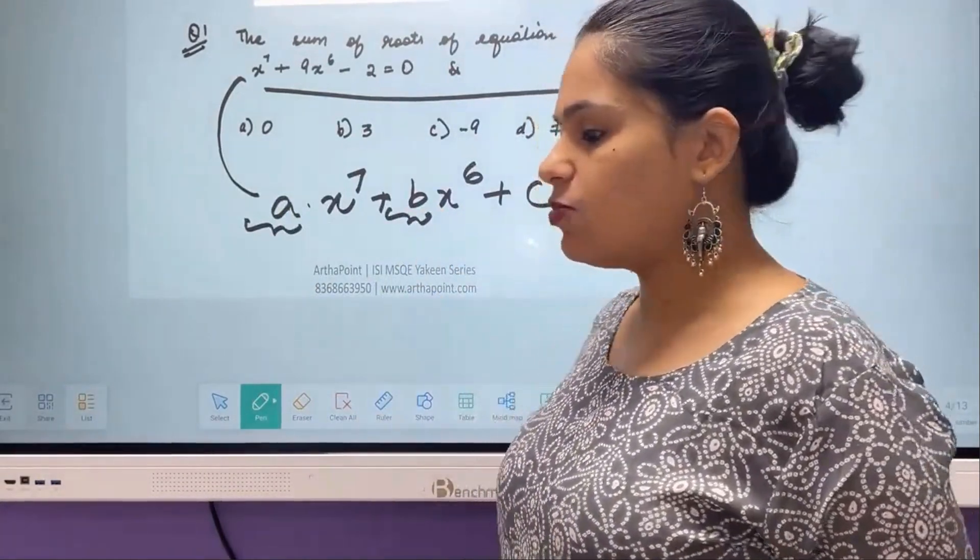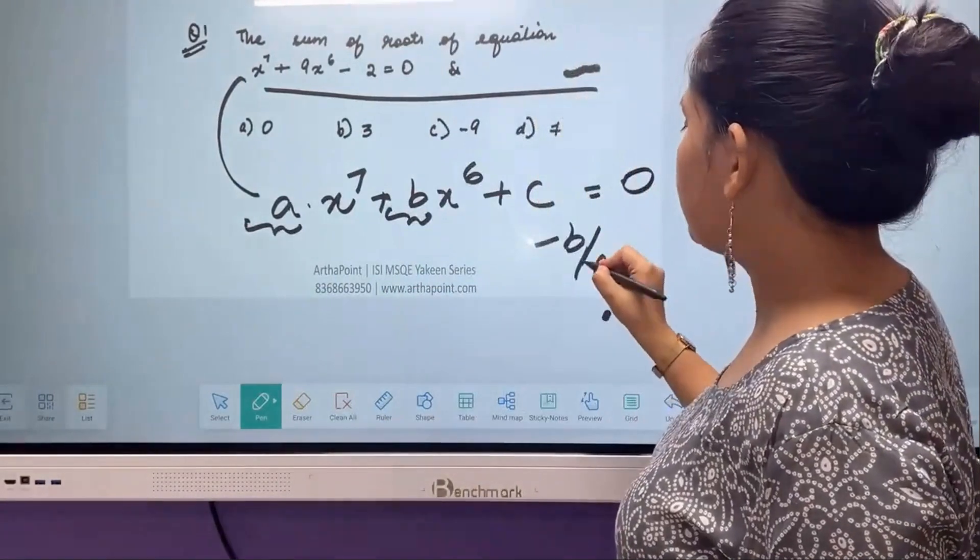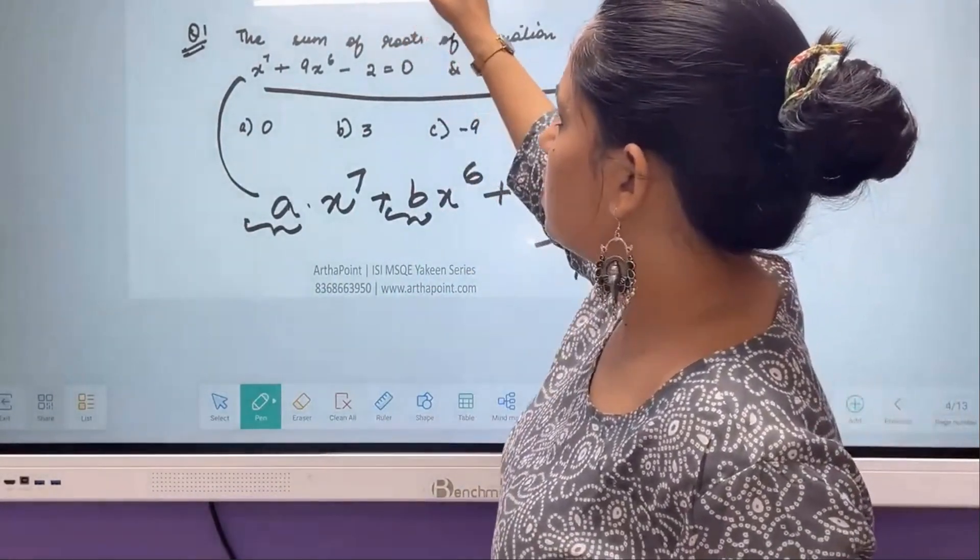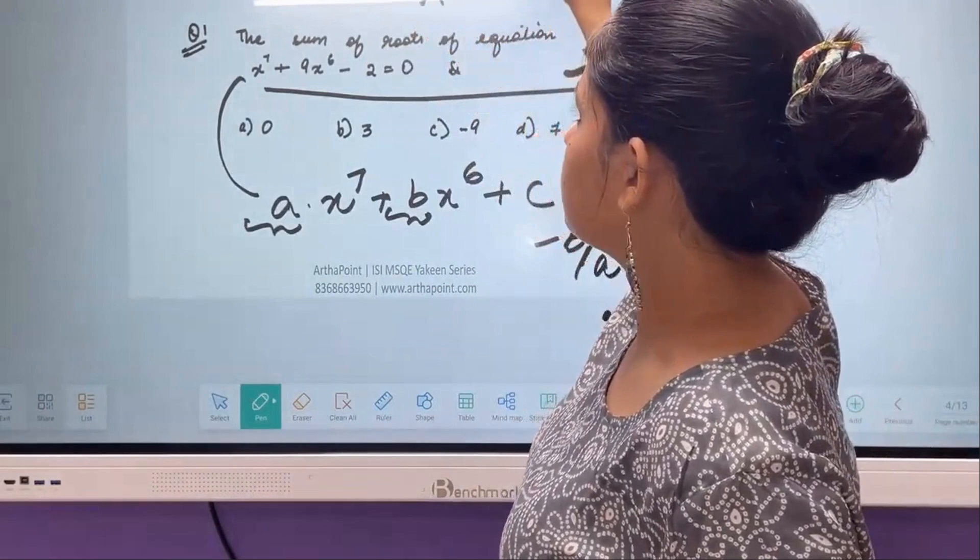And when I talk about the sum of roots, I know that it should be minus B by A. So in this case it should be minus 9 by 1, which is minus 9.